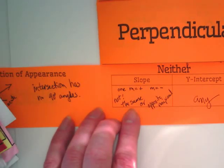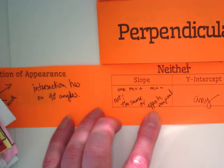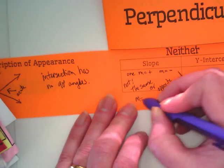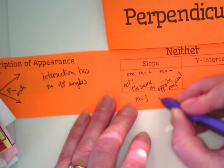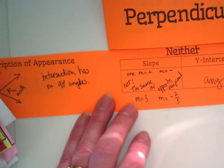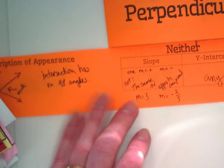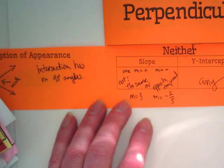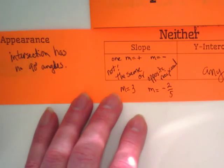Or opposite reciprocal, and they could have any y intercepts. If they were the same they'd be parallel, if they were opposite reciprocal they'd be perpendicular. So these are just any other set of angles that end up in our slope. So I might have a slope of positive three and a slope of negative two over five, and they would cross each other, one's positive one's negative, but they would not have a 90 degree angle or have a slope that's the same. Just an example.